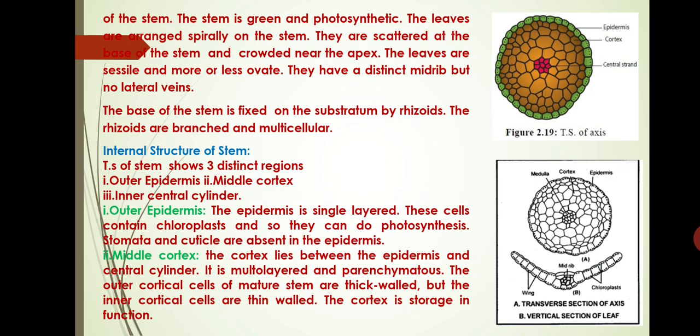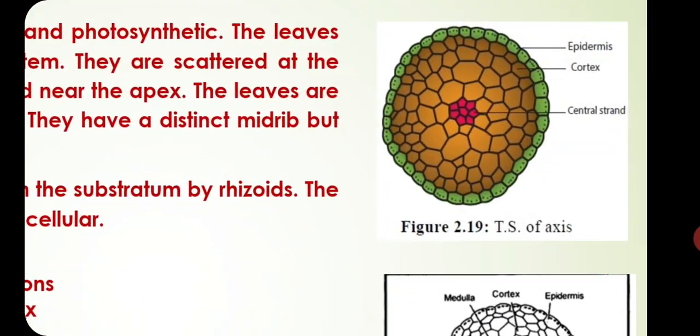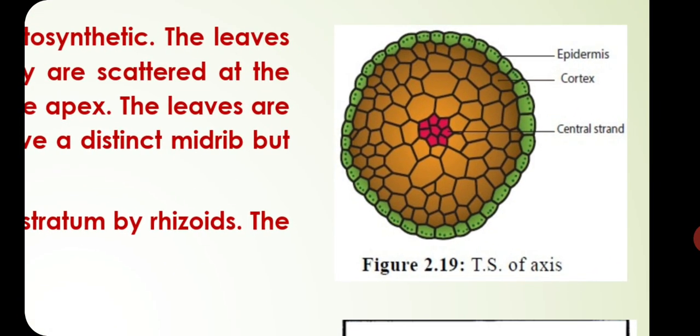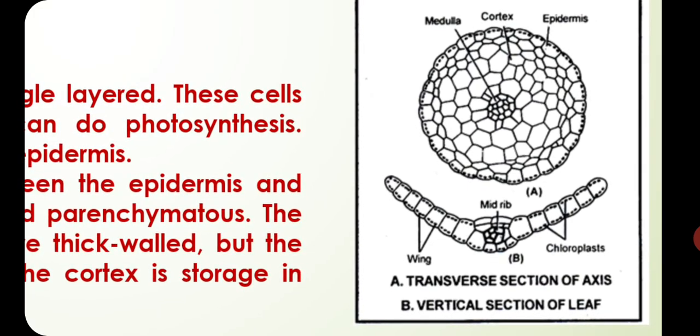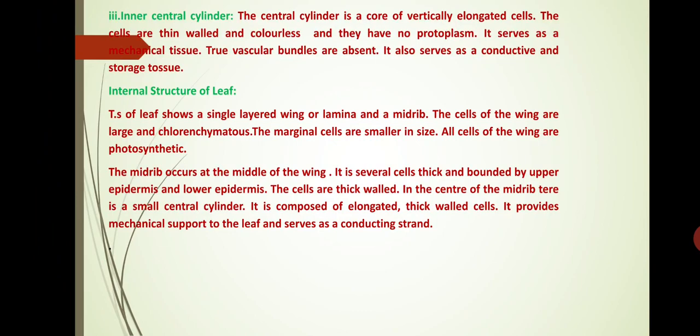Next we discuss about the middle cortex. The cortex lies between the epidermis and central cylinder. It is multilayered and parenchymatous. The outer cortical cells of the mature stem are thick-walled, but the inner cortical cells are thin-walled. The cortex is storage in function. The inner central cylinder is a core of vertically elongated cells. The cells are thin-walled and colourless and have no protoplasm. It serves as mechanical tissue. True vascular bundles are absent. It also serves as conductive and storage tissue.